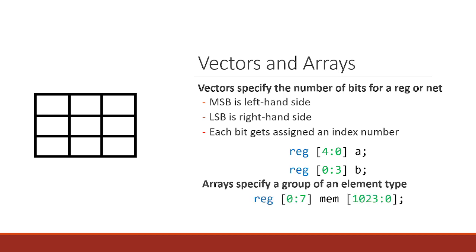If we want multiple registers or wires of a certain bit width, we can use arrays by putting another set of square brackets after the variable name. In this example, we've declared a register with a bit width of eight — most significant bit at zero, least significant bit at seven — for the variable 'mem'. Then right after that we add another set of square brackets specifying an array. In this particular example we're defining one kilobyte of memory: each slot is one byte or eight bits, and we have indices 1023 down to zero for a total of 1024 bytes.